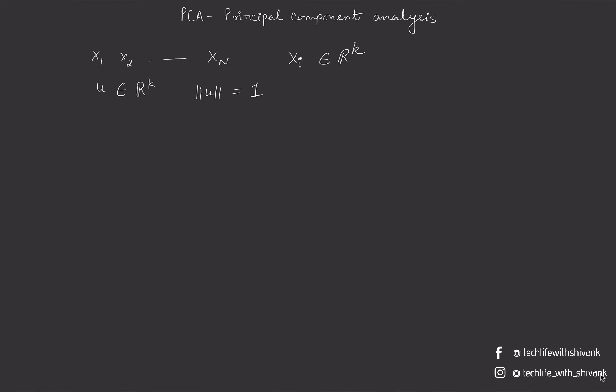So we have to find a unit direction u such that when we project these points in the direction of u, we'll get n such projected values, and the variance of these projected values should be minimum.